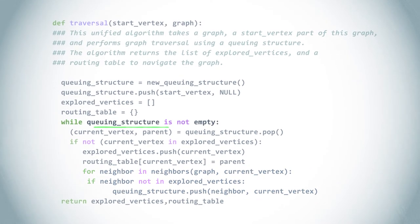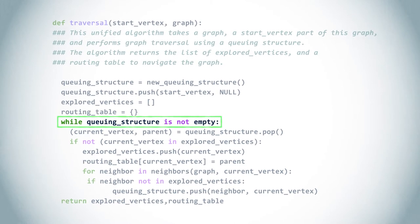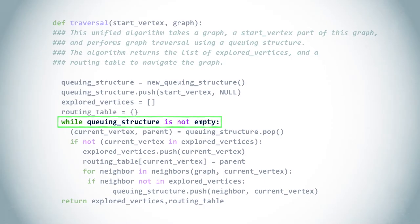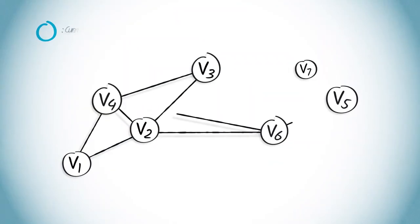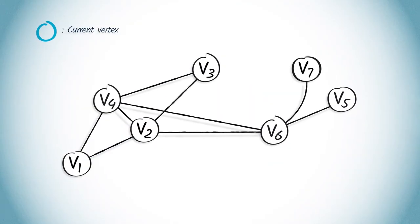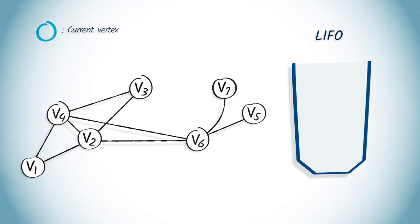The algorithm finishes when the queuing structure is finally empty. Depending on the choice of the queuing structure — a LIFO or a FIFO — we obtain a DFS or a BFS. Let's illustrate this using an example. Let's perform a DFS from V1, showing the content of the LIFO as we traverse the graph. The list of explored vertices is on the right, and we also show the routing table.